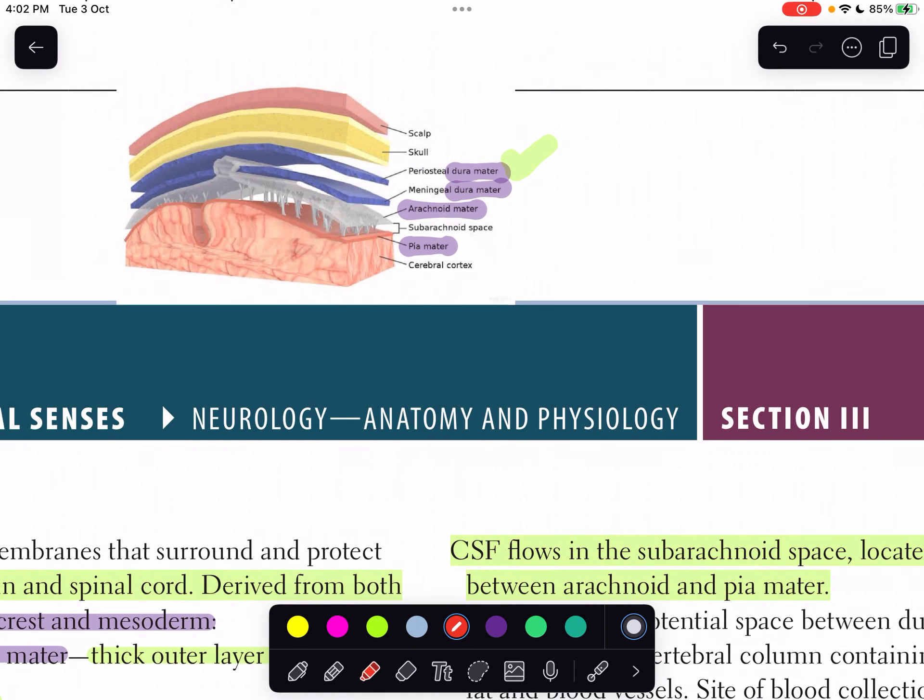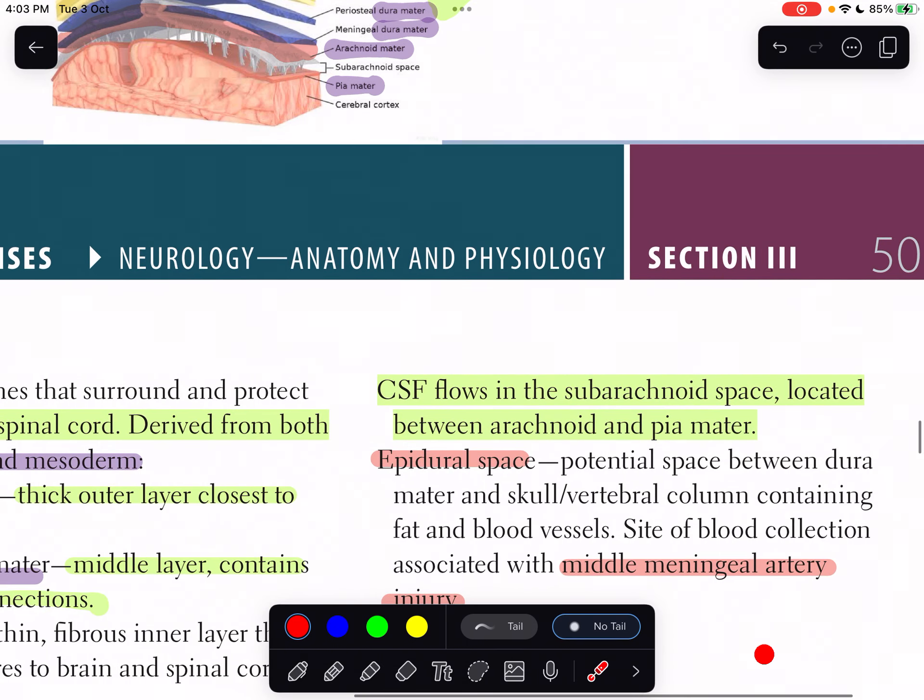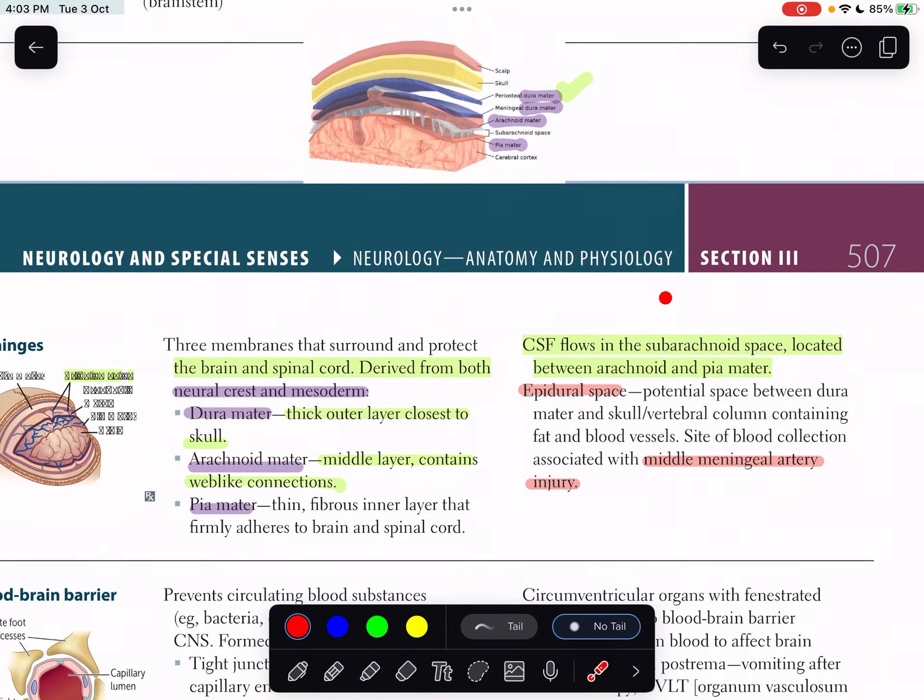This is the space over here - this is the epidural space. It basically contains blood vessels and fat. As it has blood vessels, the middle meningeal artery is going to be present there and it might rupture. Epidural space is a potential space for blood collection, so subdural hemorrhage might occur.